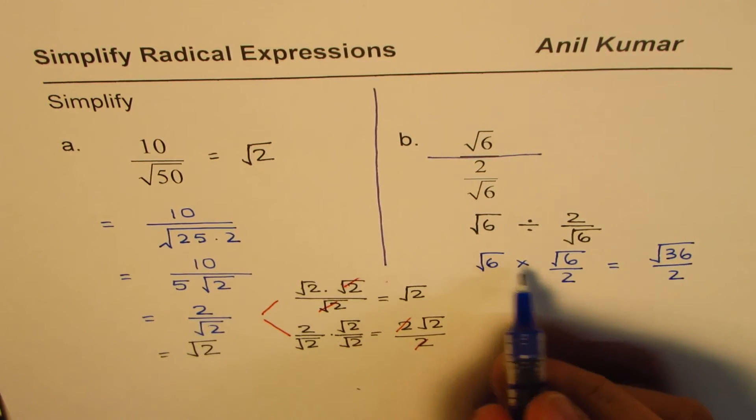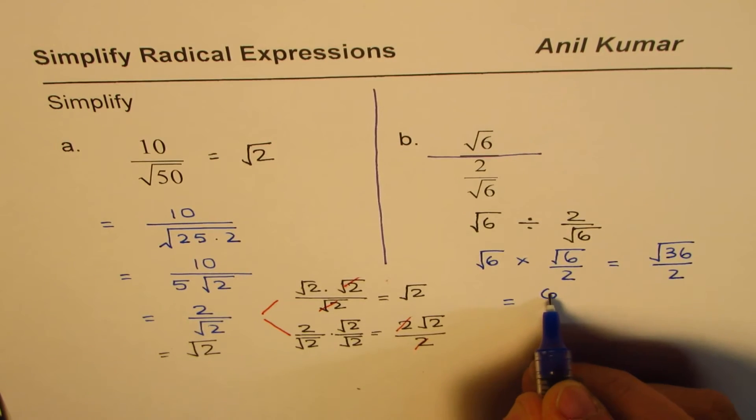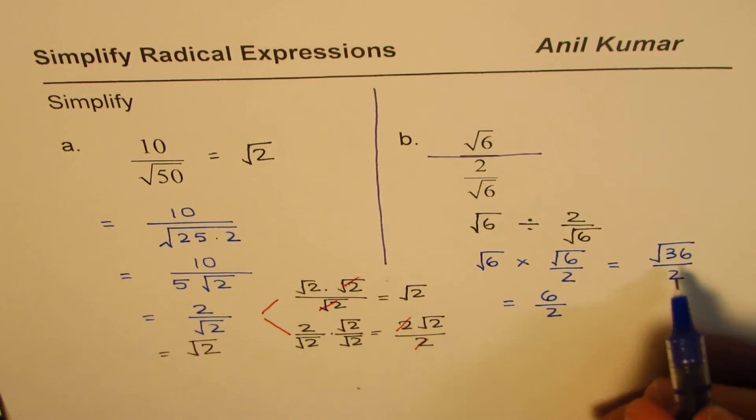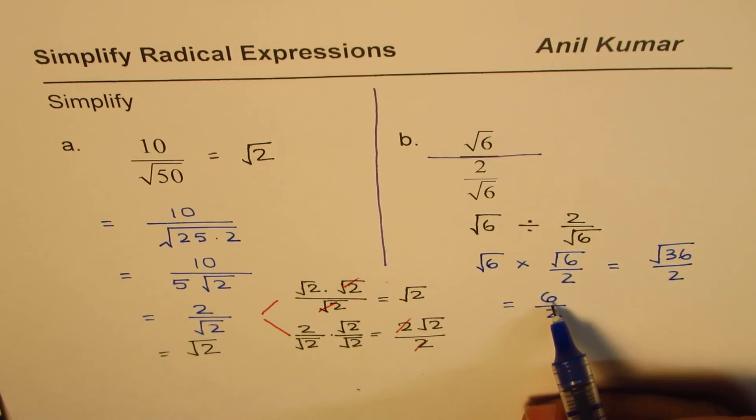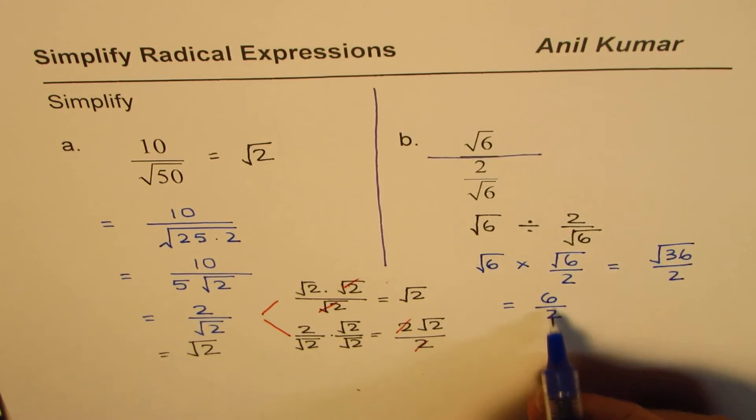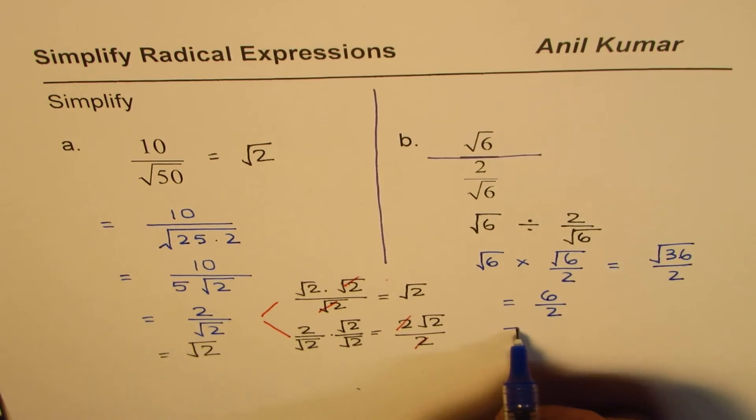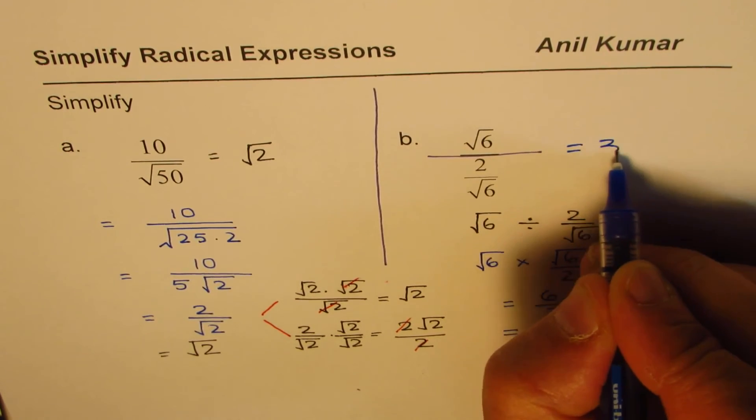Or you could also write straight square root 6 times square root 6 equals 6, right? 6 over 2. Either way, if you write 36 square root, then square root of 36 is 6. You get to the same stage, right? Now you can simplify: 6 divided by 2 is equal to 3. So our answer is this is equal to 3, right?